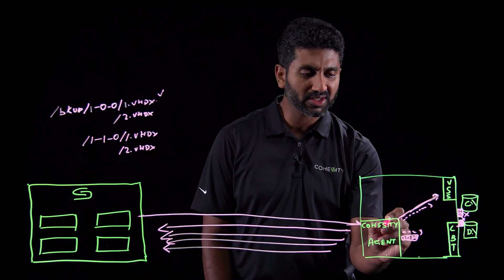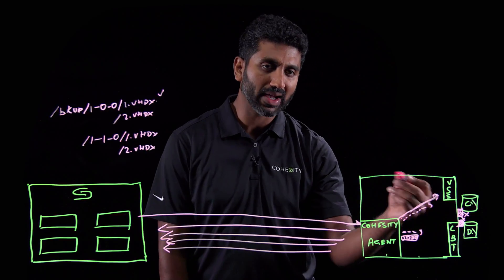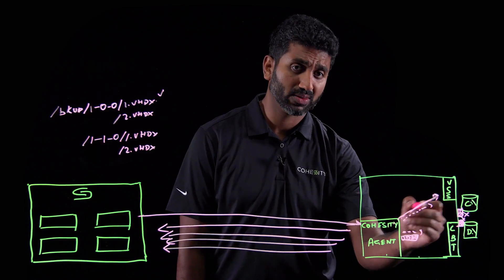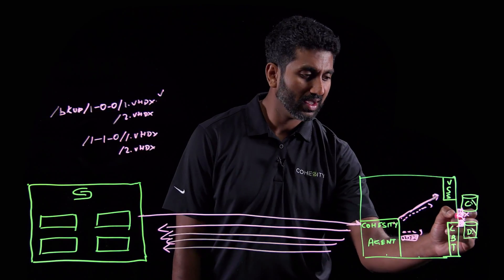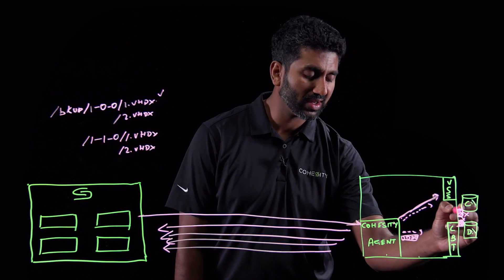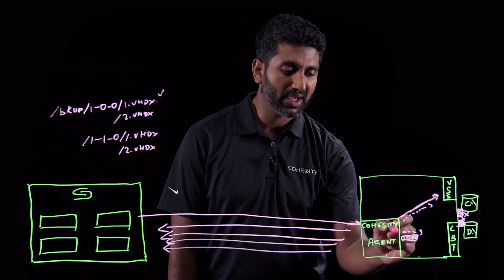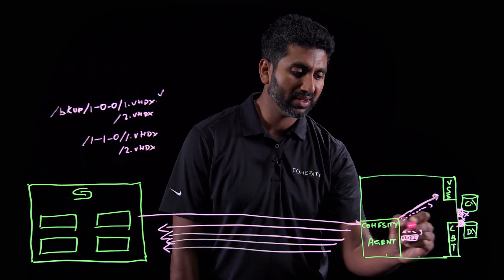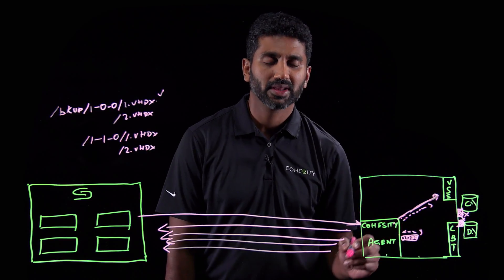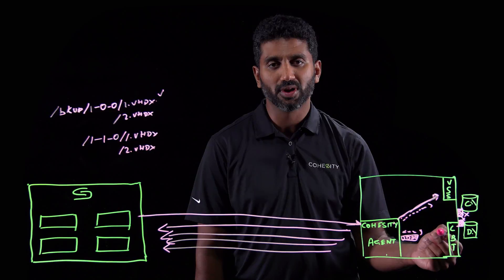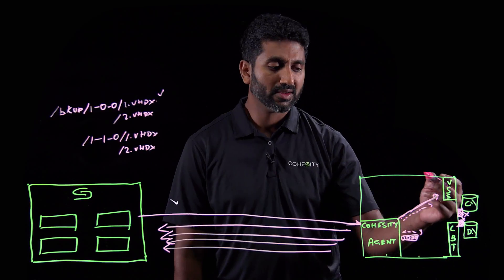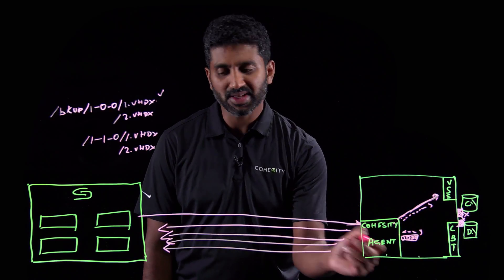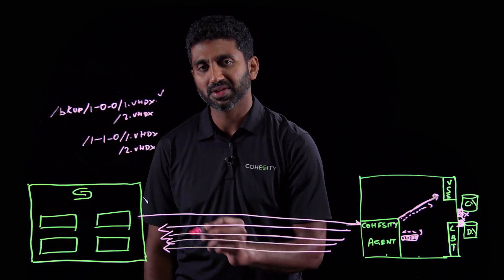The Cohesity cluster will instruct the Cohesity agent to go through the backup process. The Cohesity agent will talk to the VSS snapshot service and trigger a snapshot of the volumes. The agent will then communicate with the CBT driver and fetch the bitmap, which represents all the change blocks from the previous snapshot. The bitmap is transported back to the Cohesity cluster.